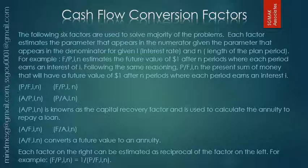For example, the factor F/P(i,n) estimates the future value of one dollar after n time periods, where each period earns an interest rate of i. Following the same reasoning, P/F(i,n), which is just the reciprocal, represents the present sum of money that will have a future value of one dollar after n time periods, where each period earns an interest rate i. As you can see, they are listed in pairs — P/F(i,n) is the reciprocal of F/P(i,n).